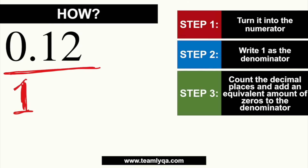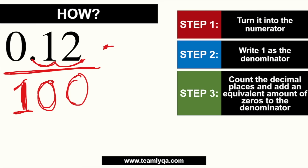Step three: count the decimal places and add an equivalent number of zeros to the denominator. So for 0.12, there are two decimal places — one, two — so I add two zeros to the denominator: 1 becomes 100. In order for 0.12 to become the whole number 12, I move the decimal two places, so I add two zeros below. The number of decimal places equals the number of zeros. So this fraction becomes 12 over 100.